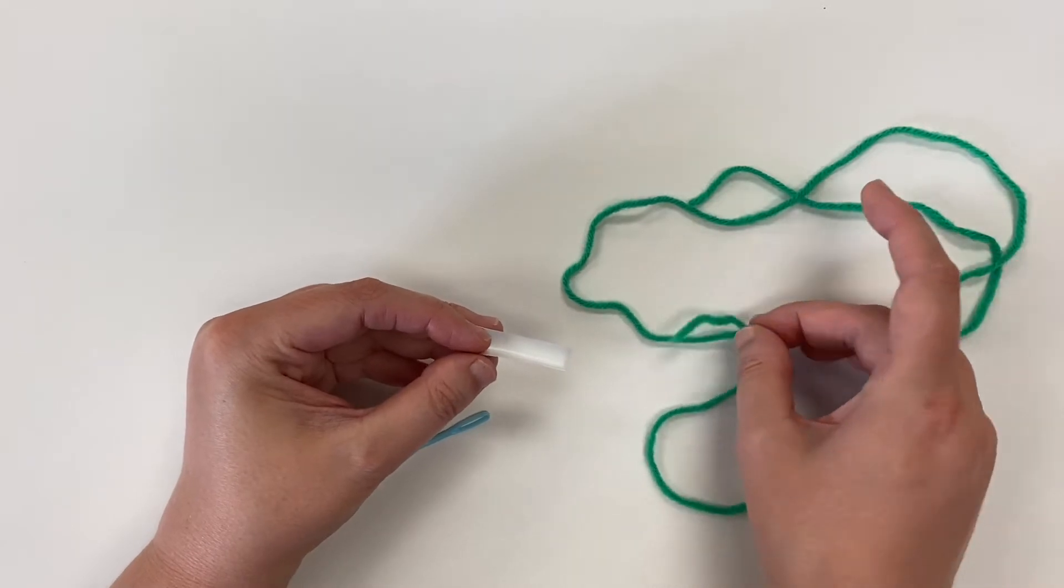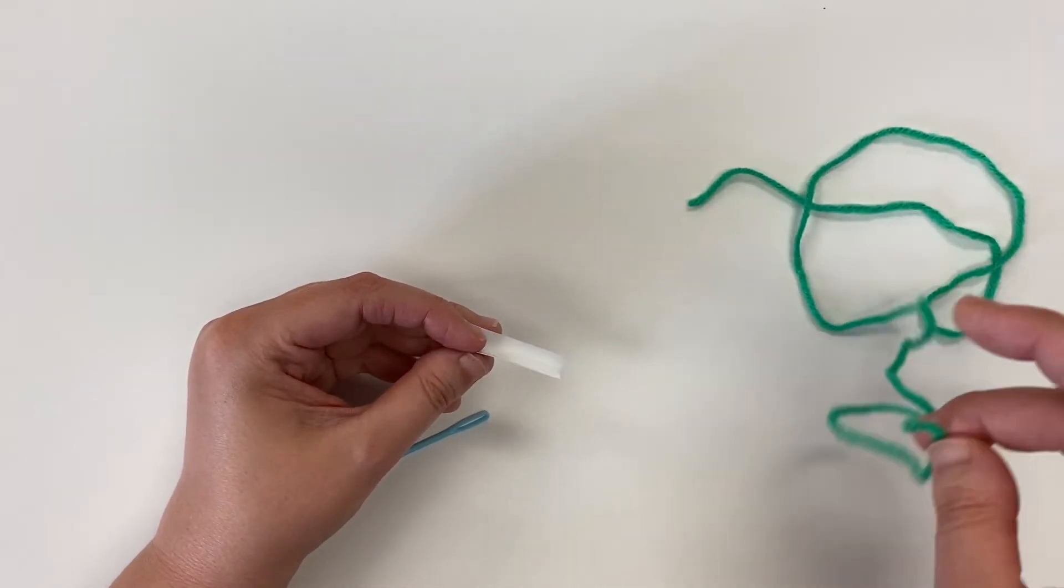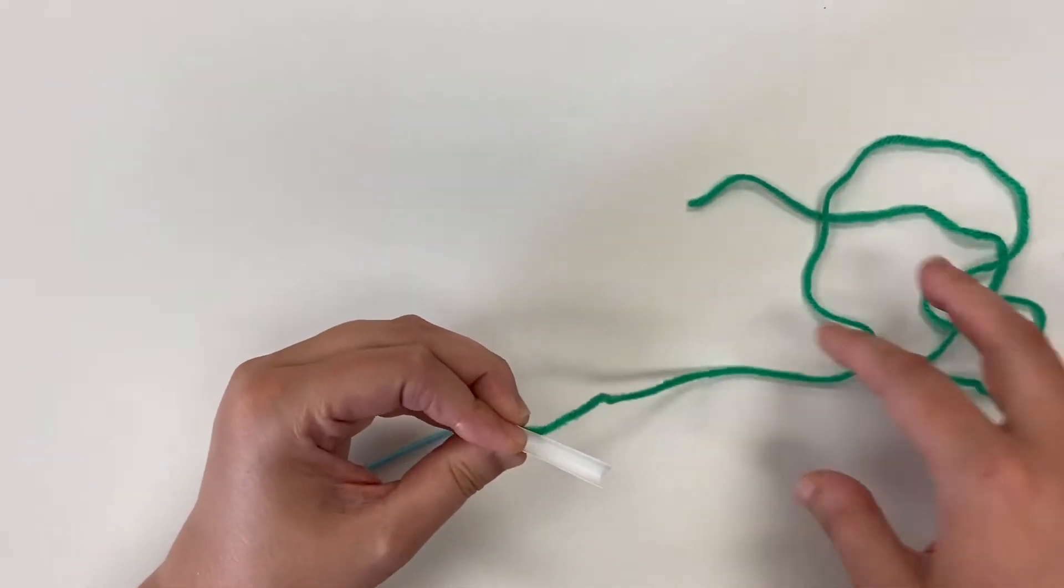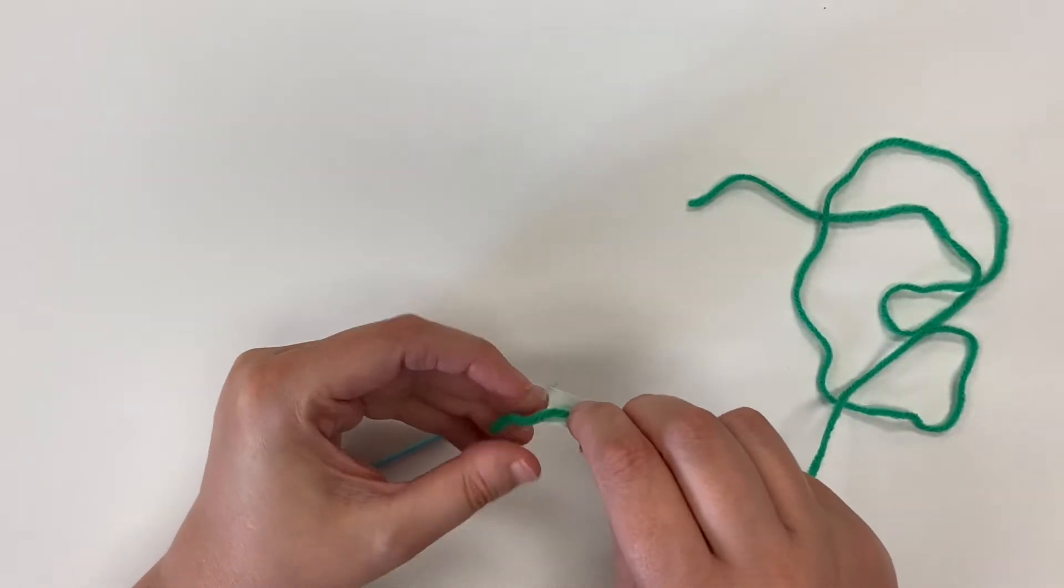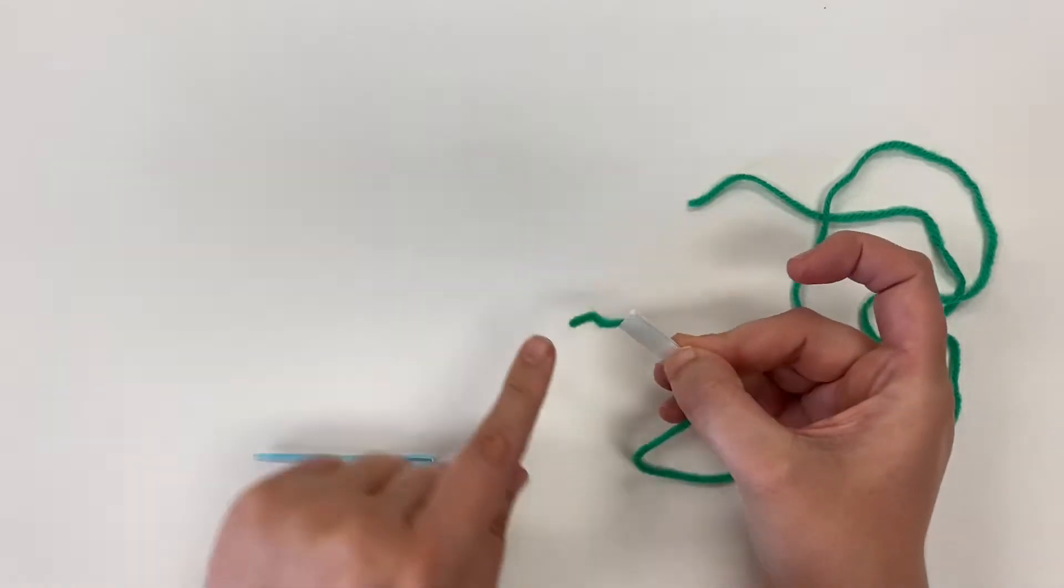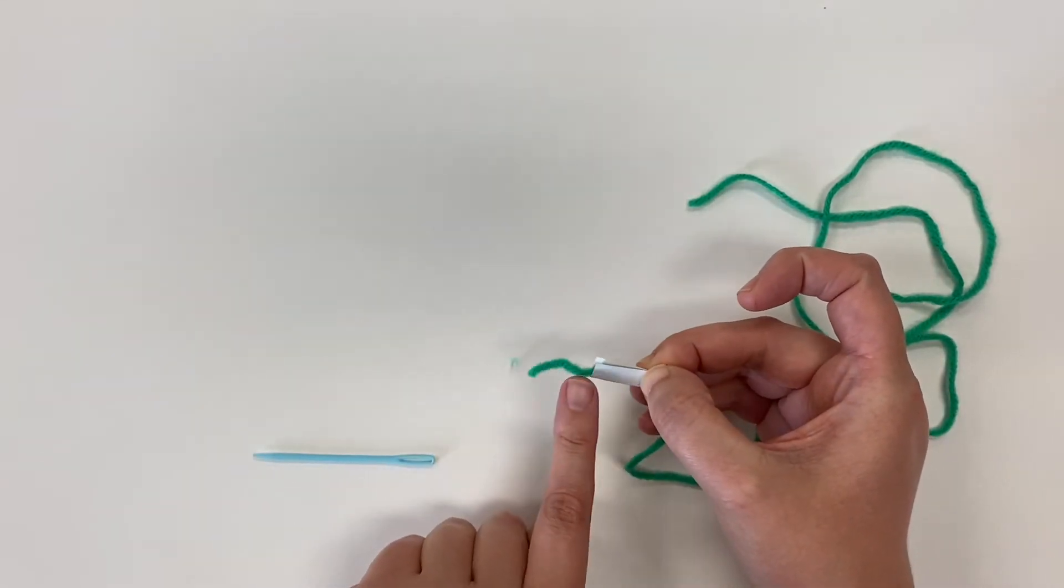You're going to put your yarn inside the hot dog bun. I'm just going to put it right inside. If you have a little bit of yarn that's hanging out on the end,